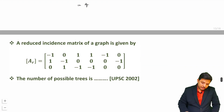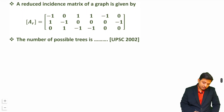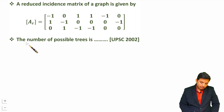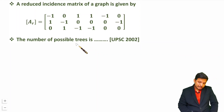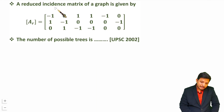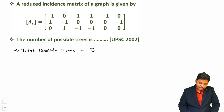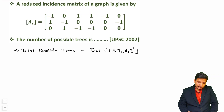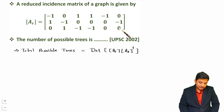Let us have one more question. A reduced incident matrix of a graph is given. The number of possible trees is how many? Whenever you are given a reduced incident matrix, the total possible trees equals the determinant of Ar multiplied by Ar transpose.